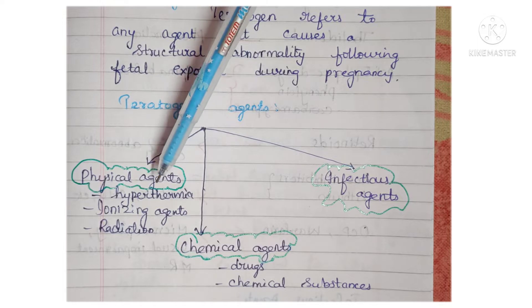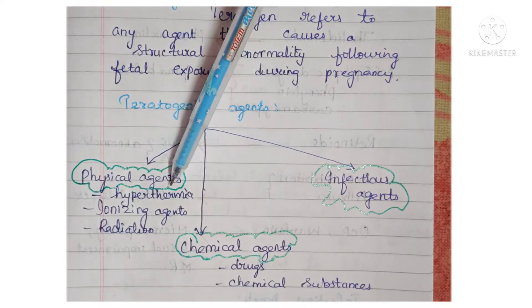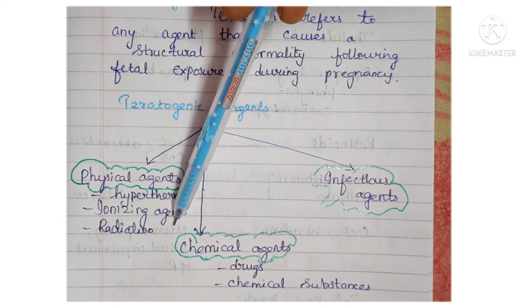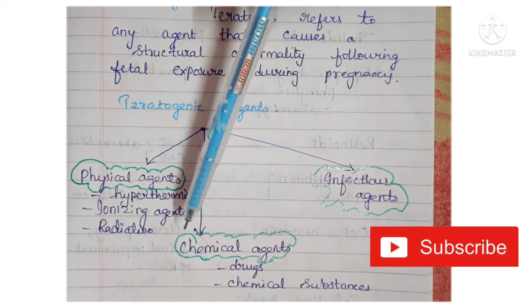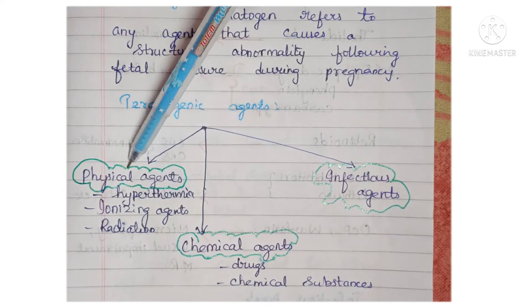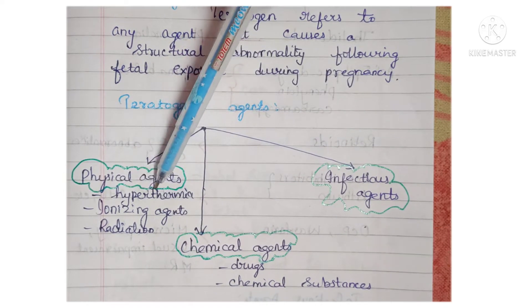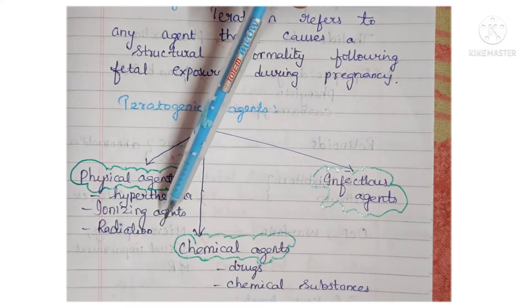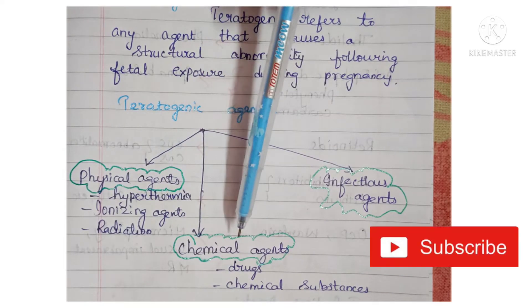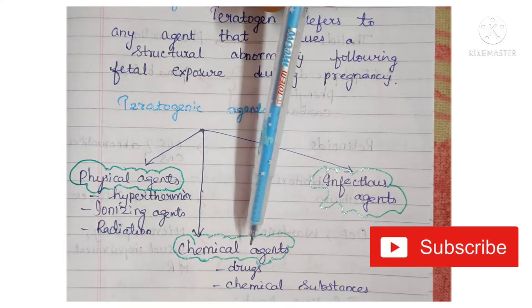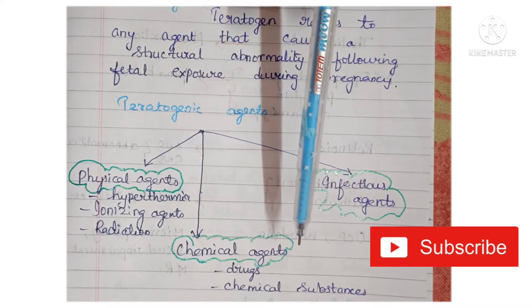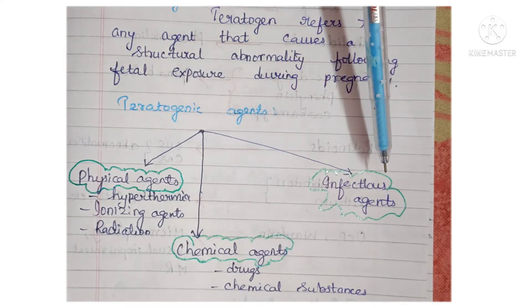Under physical agents, you have hyperthermia — that is excess heat — ionizing agents, and radiation. Under chemical agents, you have drugs and chemical substances.